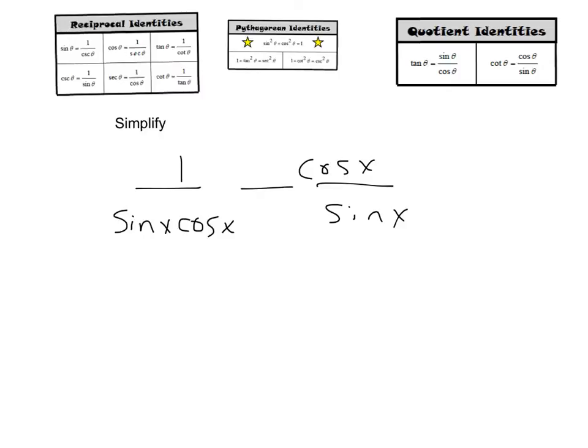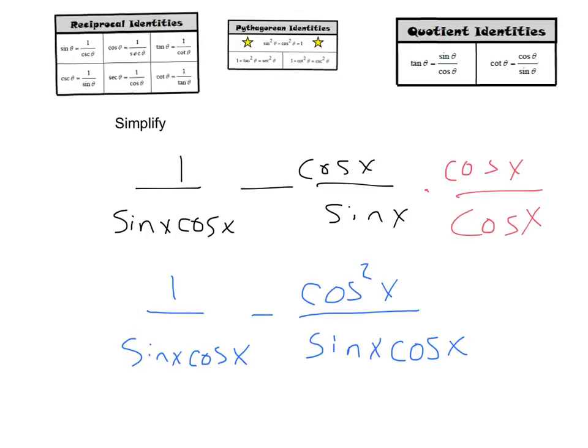Alright, now that we've got everything rewritten using only sine and cosine, let's see what we can do from here. Well, I know I want to get to as few terms as possible, so what if I rewrote these fractions with common denominators? So I see here I have 1 over sine x cosine x. Here my denominator has a sine x but not a cosine x. So let's multiply this one by cosine x over cosine x. That's going to leave us with 1 over sine cosine minus cosine squared over sine cosine.